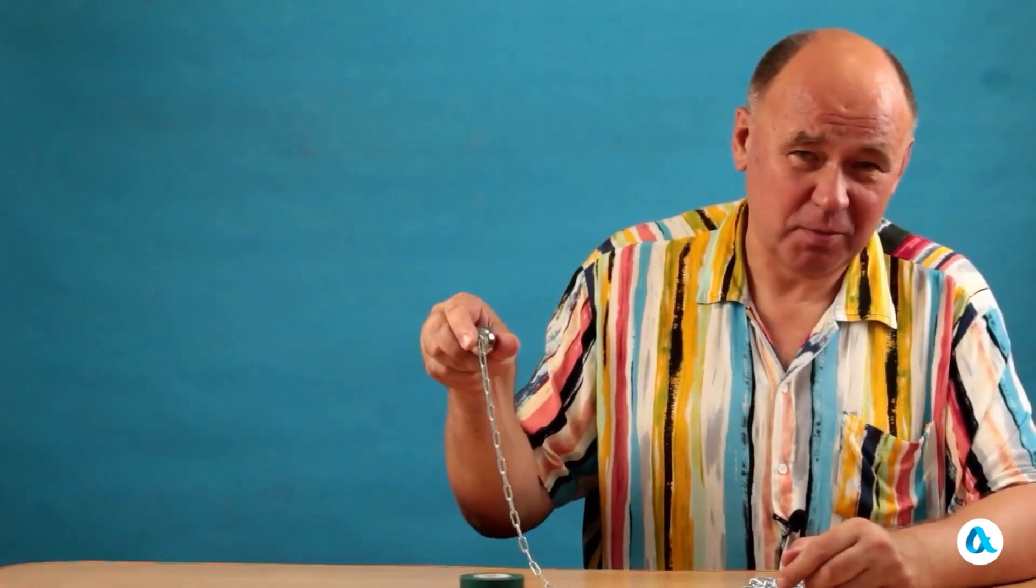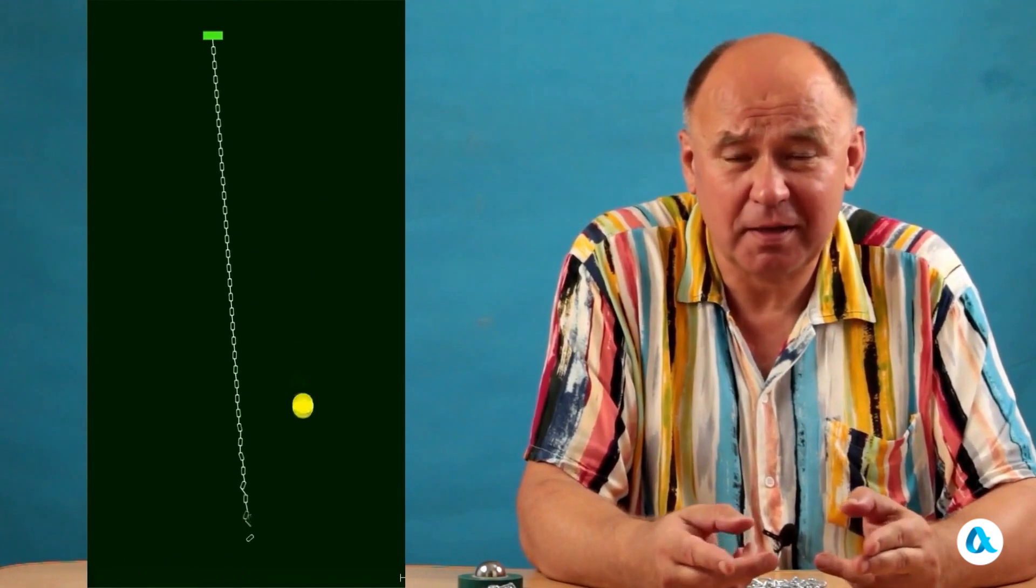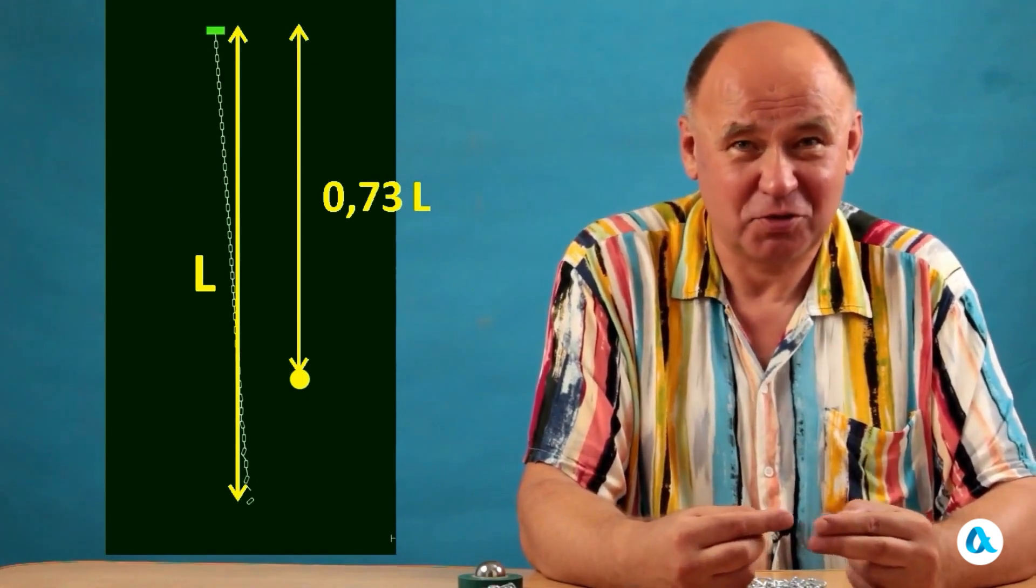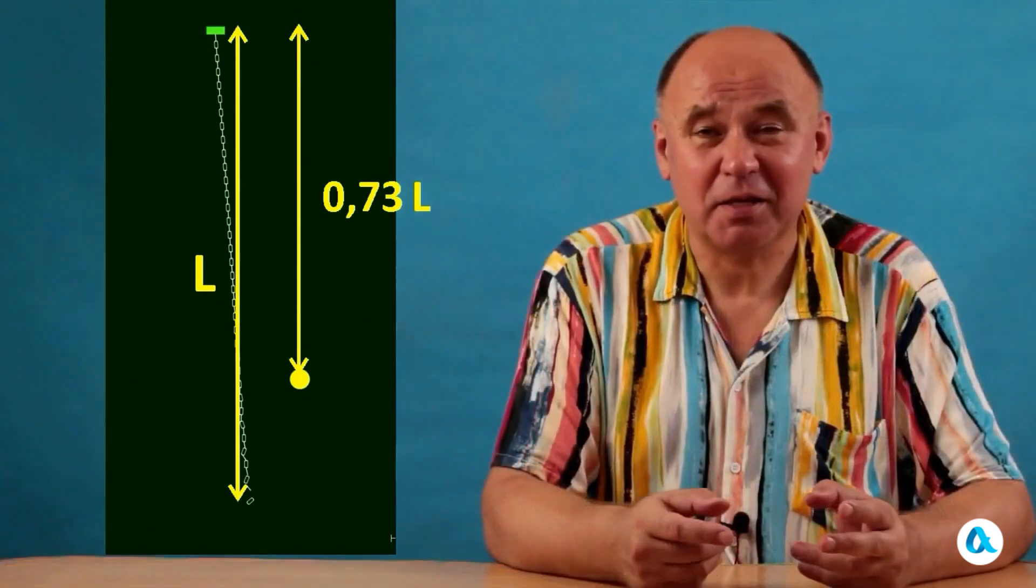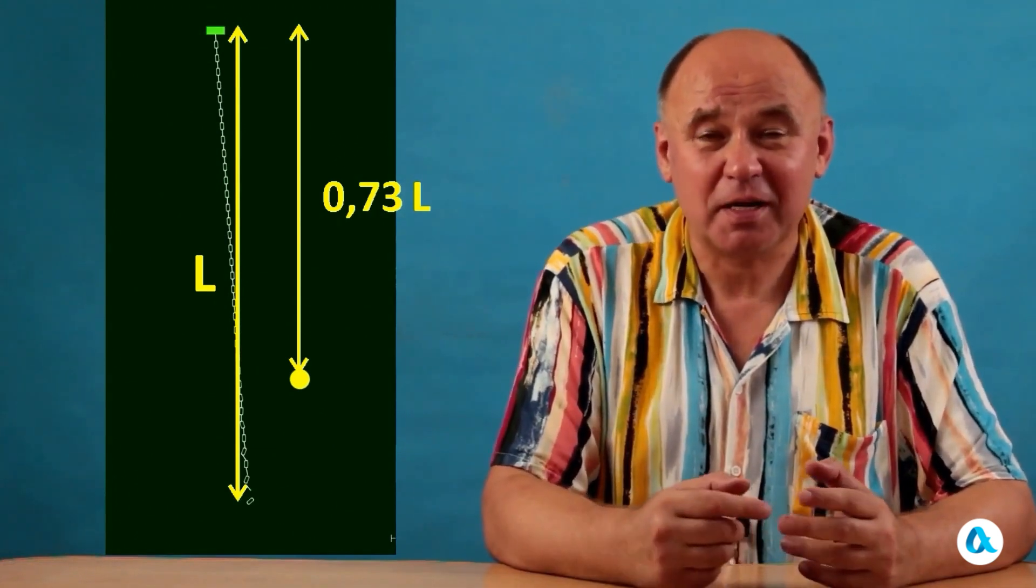In the experiment, I released the ball and the end of the chain with my hand. And as our young physicist friends like to say, to eliminate the human factor, I conducted a control experiment in the Algodoo program. Here, the ball and the chain fall down. First, they go together, and then the end of the chain also goes forward. And in the freeze frame, we see that the path traveled by the ball is again 73 hundredths of the length of the straightening chain. Thus, the results of the computer simulation match the results of the real experiment.